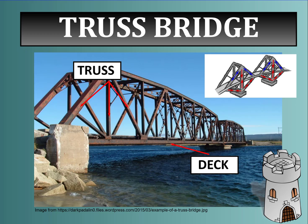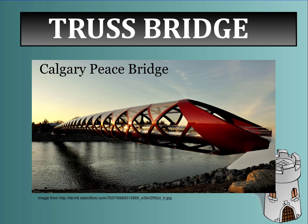A truss bridge comprises trusses and a single deck. These trusses hold up the bridge deck and resist compression and tension because they are filled with triangles. The Calgary Peace Bridge in downtown Calgary is a prime example of a truss bridge.